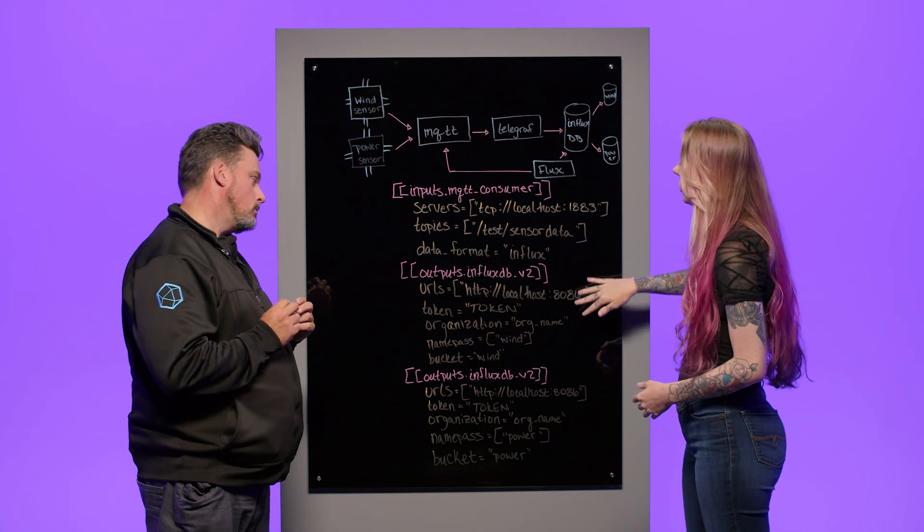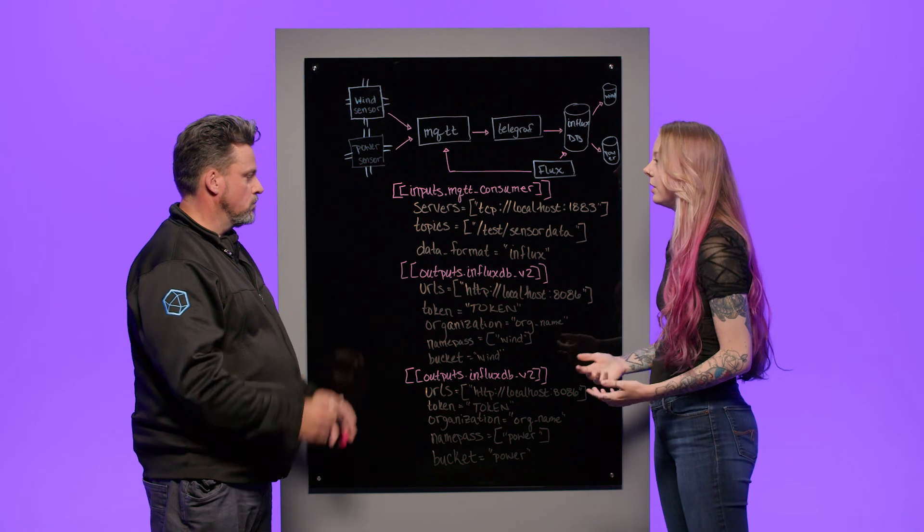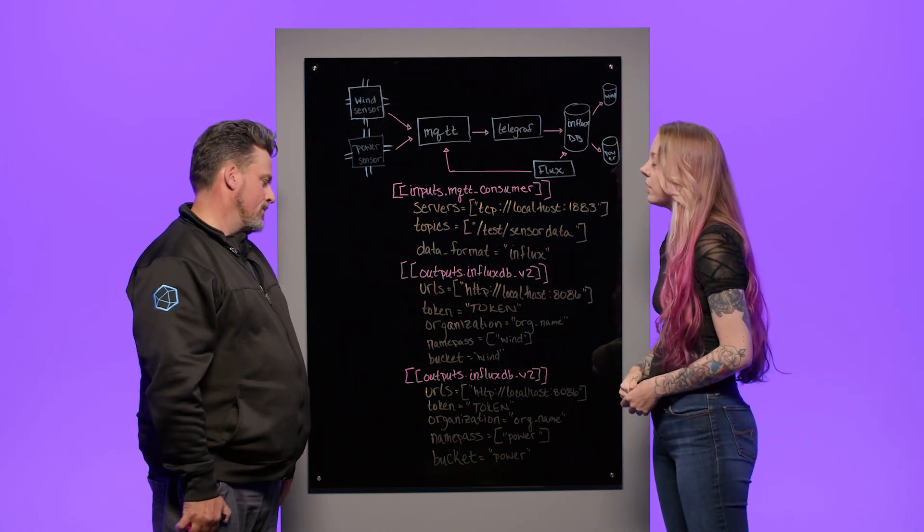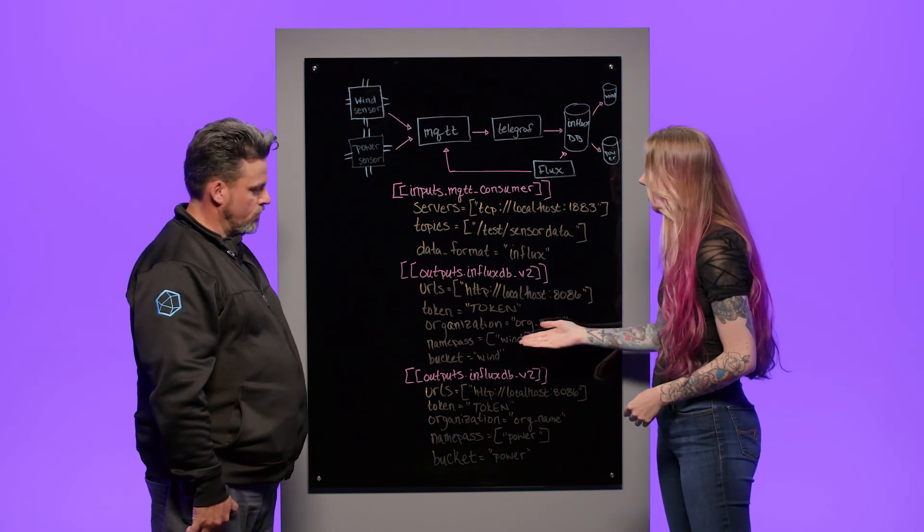Where things get fun is we have two InfluxDB outputs. We have our URLs, which, again, is localhost. The tokens, which you'll get when you set up your InfluxDB buckets, your organization name. Then you have namepass and bucket.